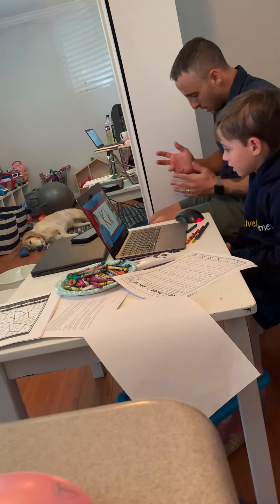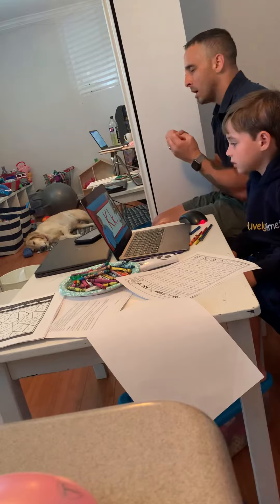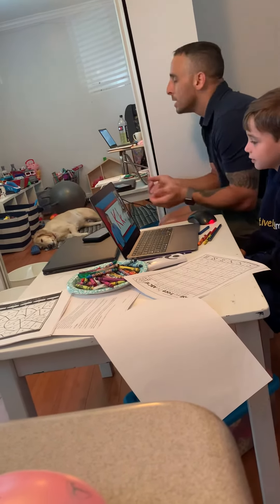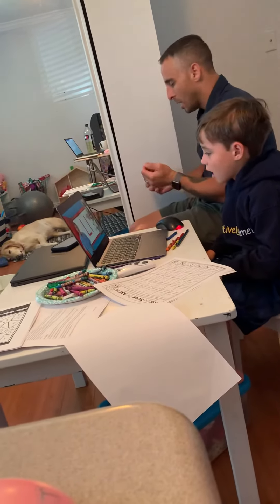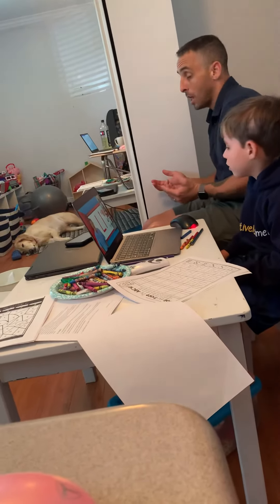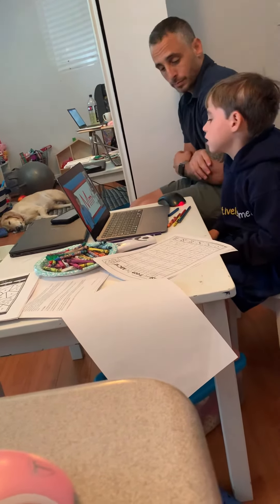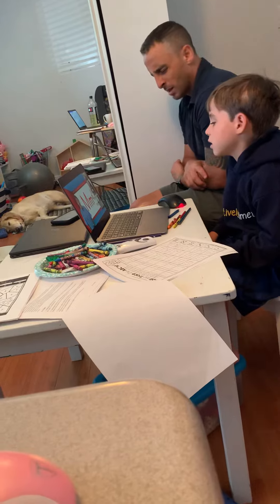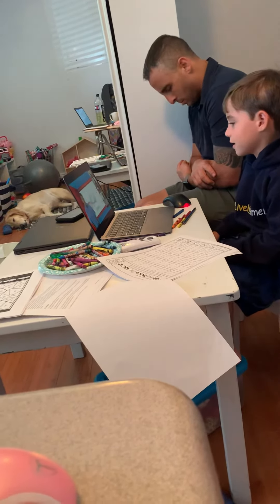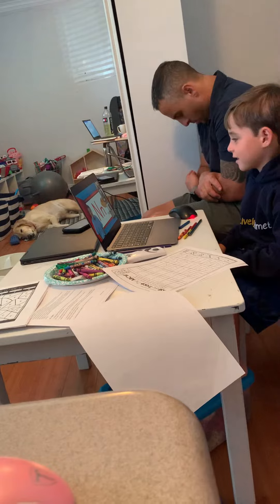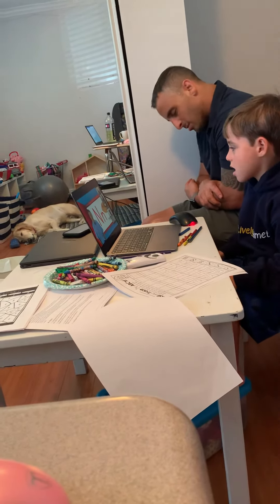K is for kite. K, k, kite. L is for lamb. Lamb. M is for mouse. Mouse. N is for nest. Nest.